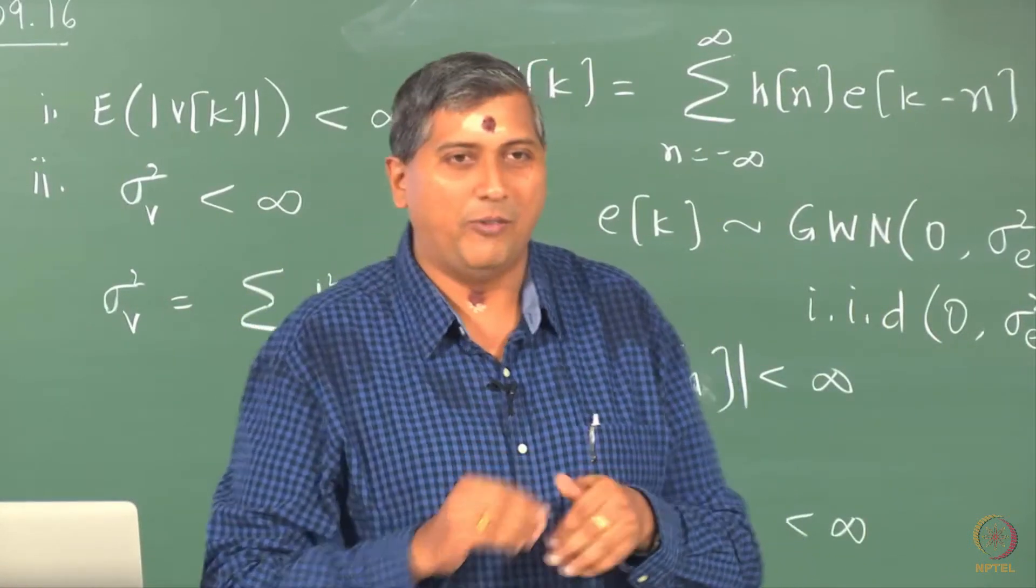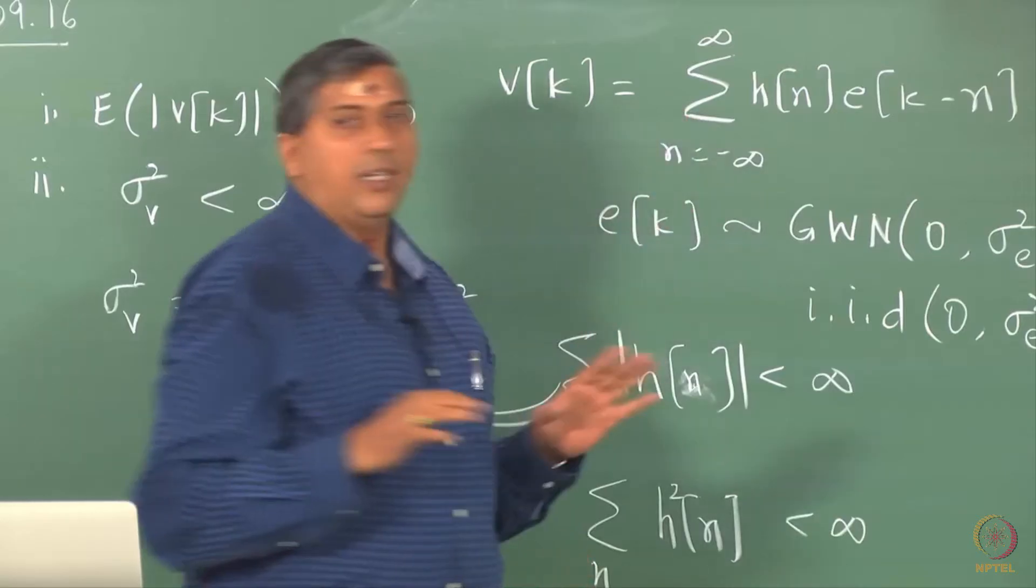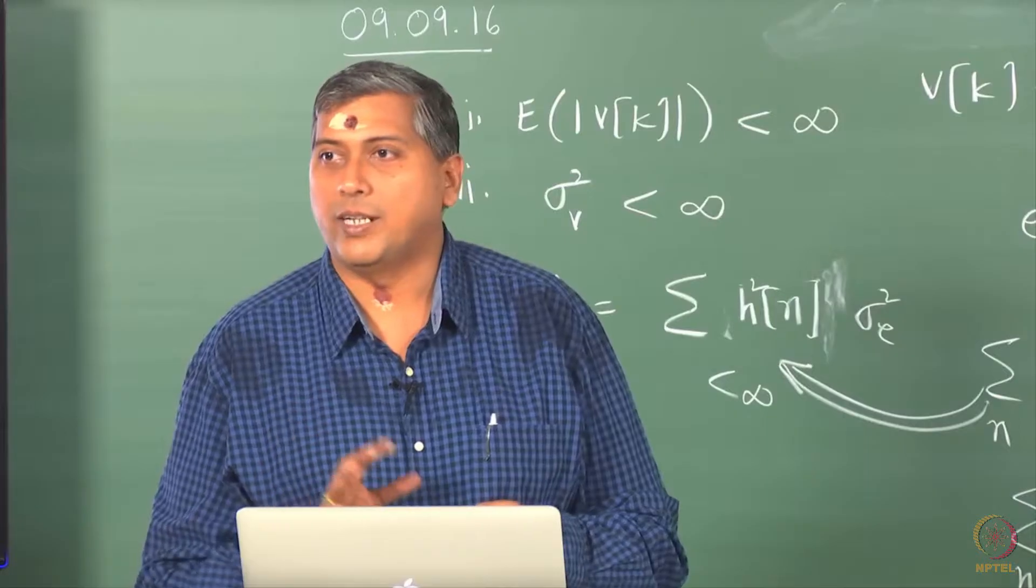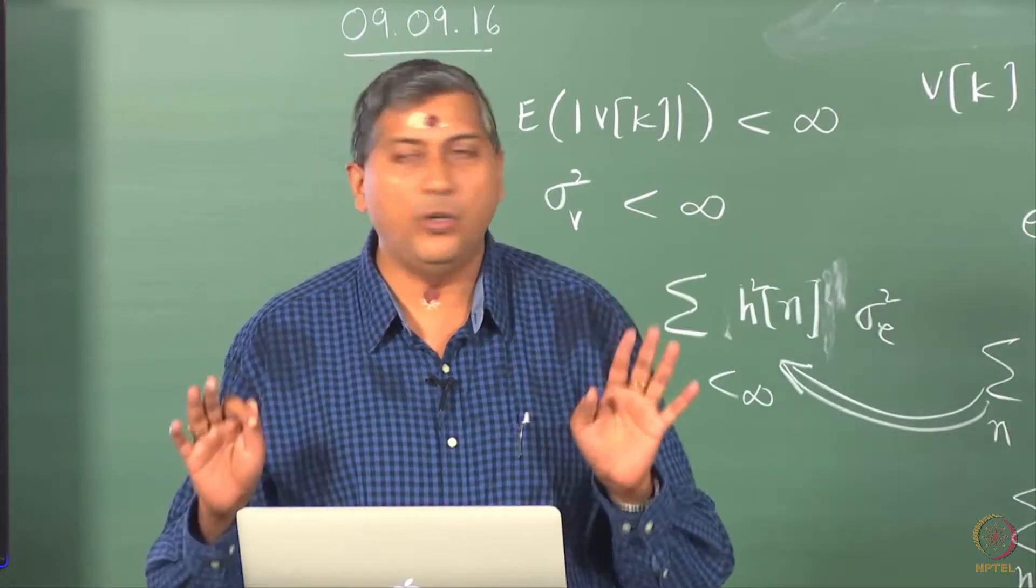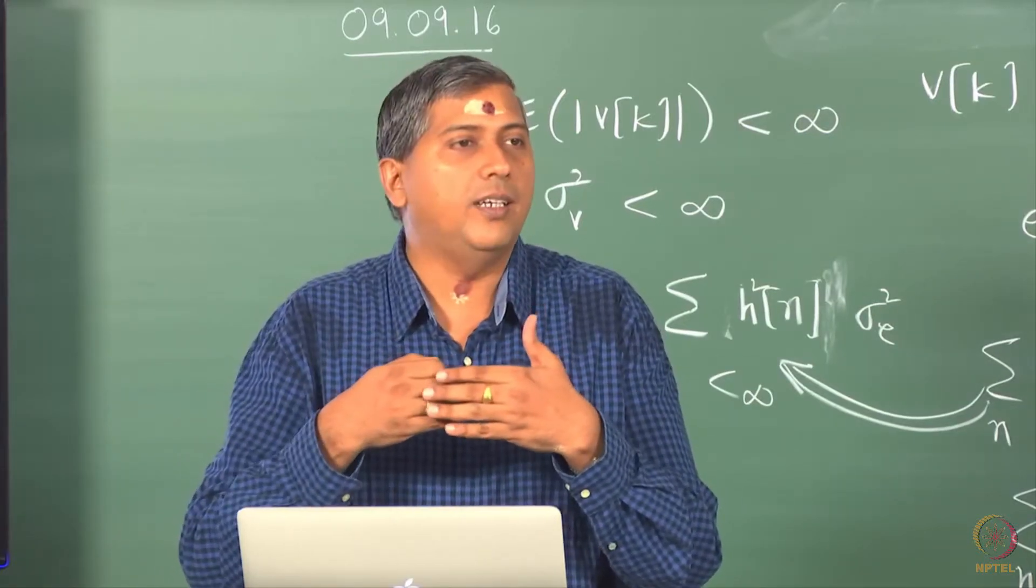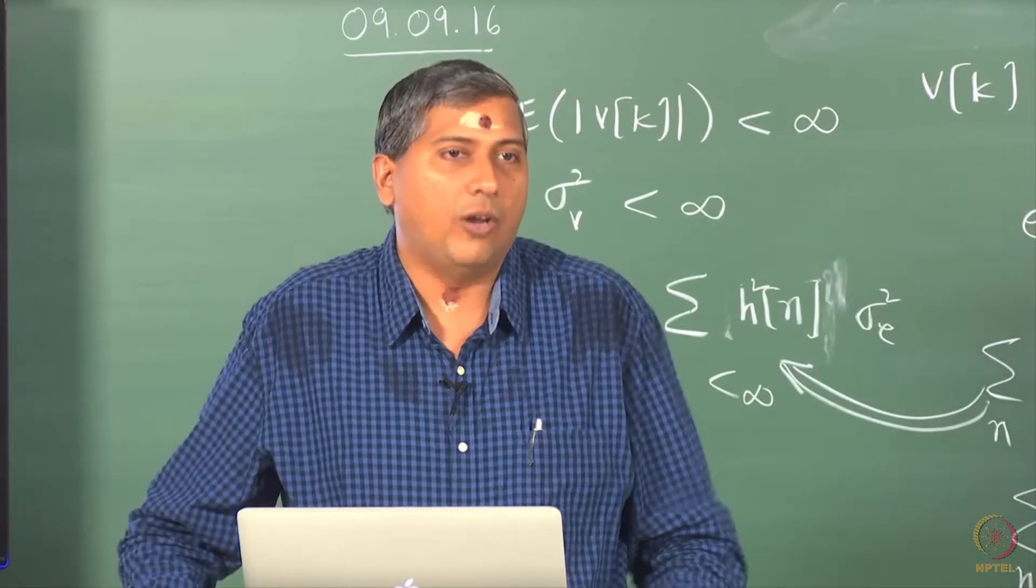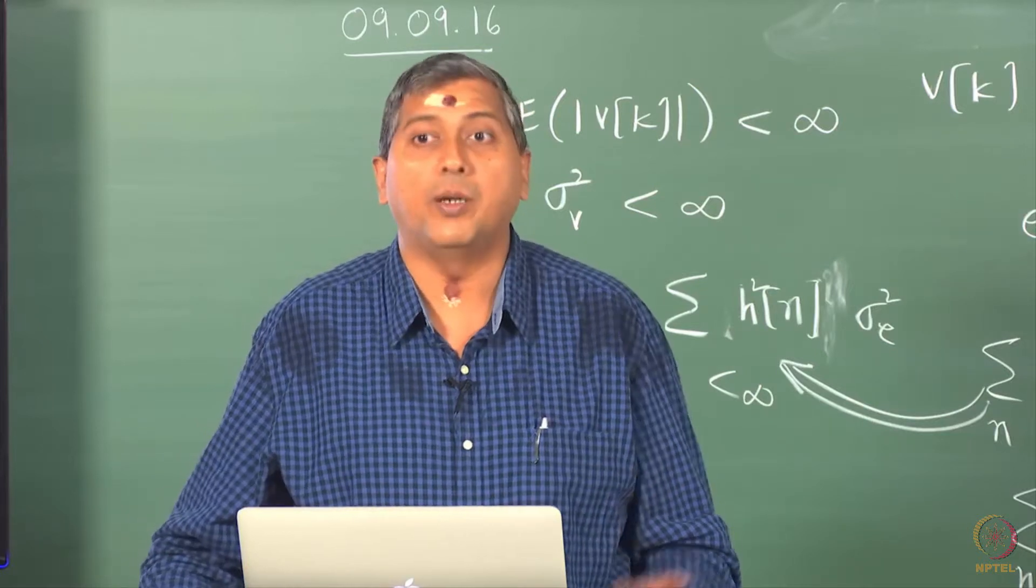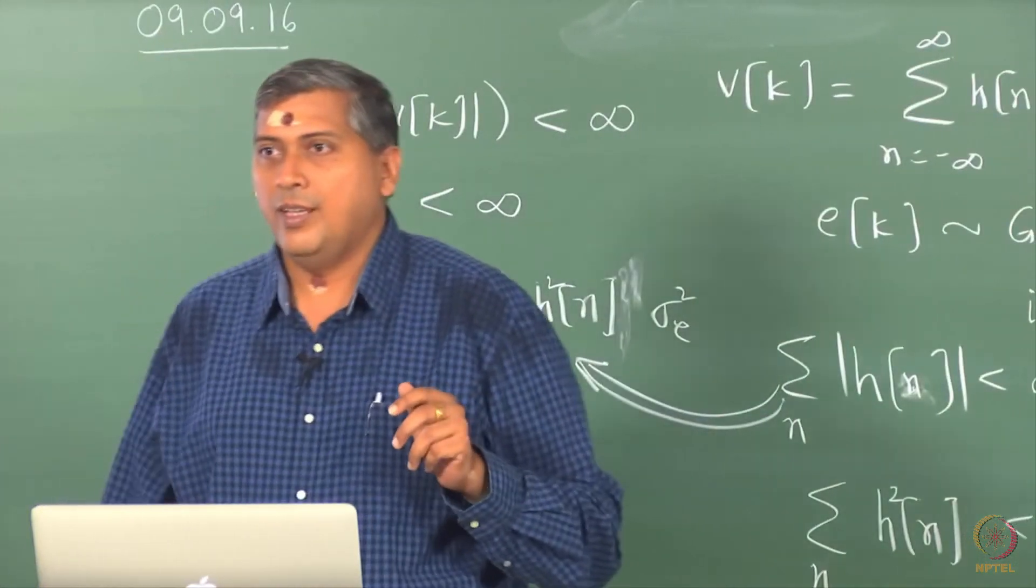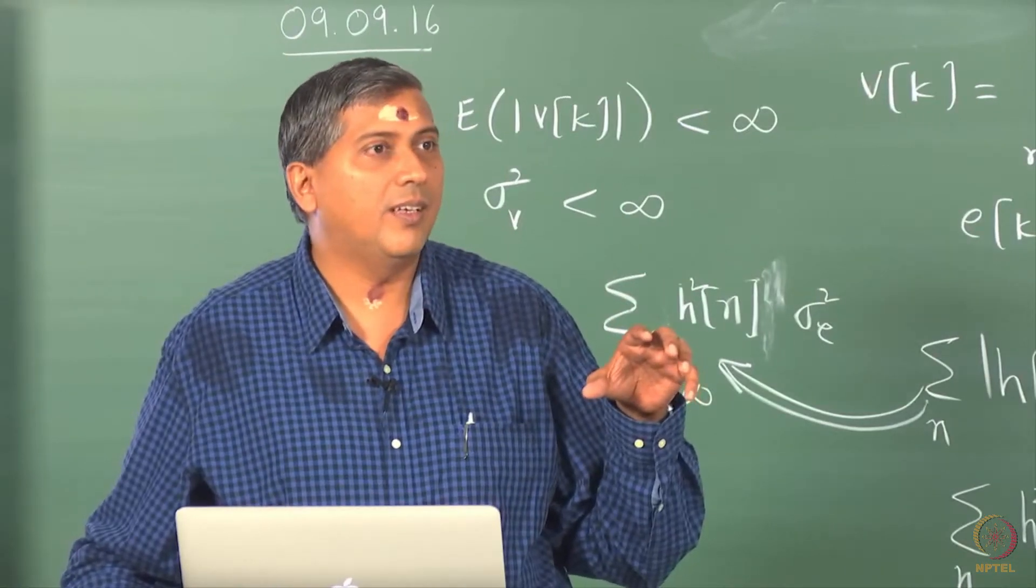We will first talk about the another important one. Remember, we said we can write the definition, we can think of this representation only for processes with what property. That is okay. That is going to give me guarantee optimality. So the jointly Gaussian requirement is for optimality so that the conditional expectation and this linear predictor or linear representation will give me same predictions.